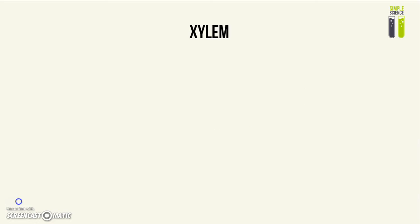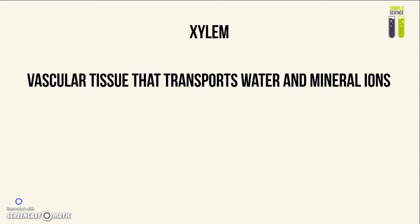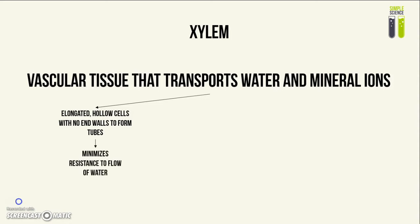First of all, the xylem. The xylem's function is to transport water and mineral ions around the plant. It has elongated hollow cells with no end walls, which forms tubes or pipes, and this is so that there is the minimal amount of resistance to the flow of water.